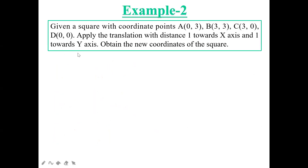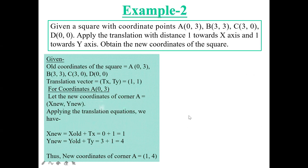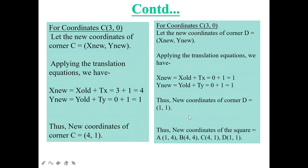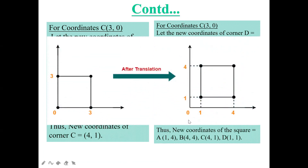I have one more example with a square having four vertex points, a given translation distance, and you need to obtain the new coordinates of the square. The answers are already prepared. You need to do both alternative methods — the equation form and the matrix form — and then represent the result on a graph. This covers 2D translations.